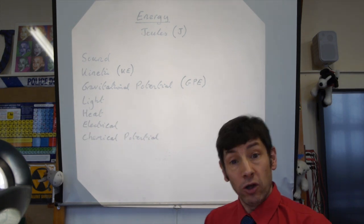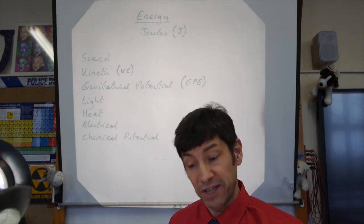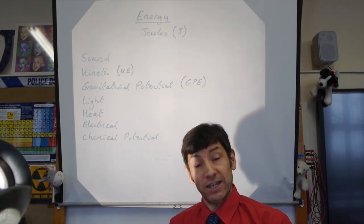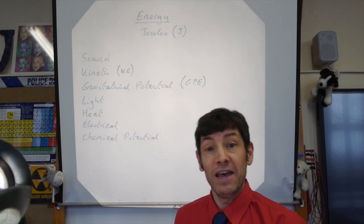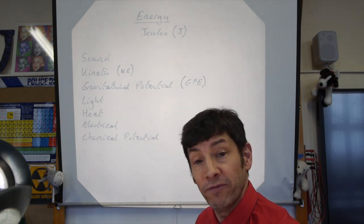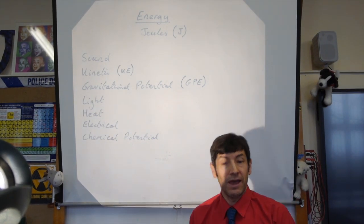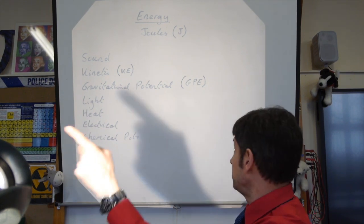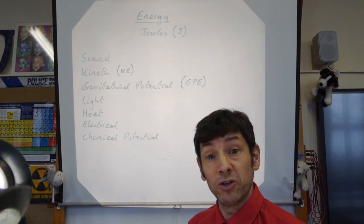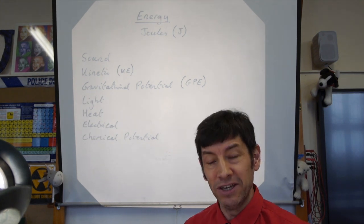Lots of devices have energy going into them and energy that's converted and comes out of them, and it will be at least one from this list. In my next video I'm going to show you some devices and ask you about the energy transfers — which form of energy is going in and what comes out. My projector has electrical energy coming in, and it's designed to give out light, but it also gives out a little bit of sound and quite a lot of heat — which means it's wasting some of the electrical energy we put into it.